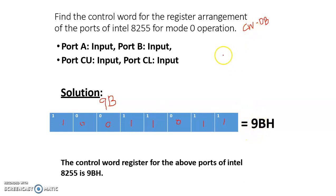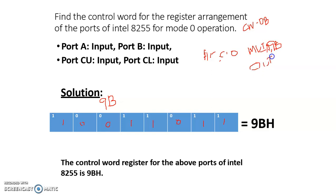Now we have to program the second unit. Let me write the program from address A500 onwards. First instruction: move immediate data — the control word which is 9B — to the accumulator register: MVI A, 9B. Now output this to the address of the control word register: OUT DB. So the control word register will be loaded with the value 9B, and all the ports in 8255 second unit will be programmed as input ports in mode 0 operation.